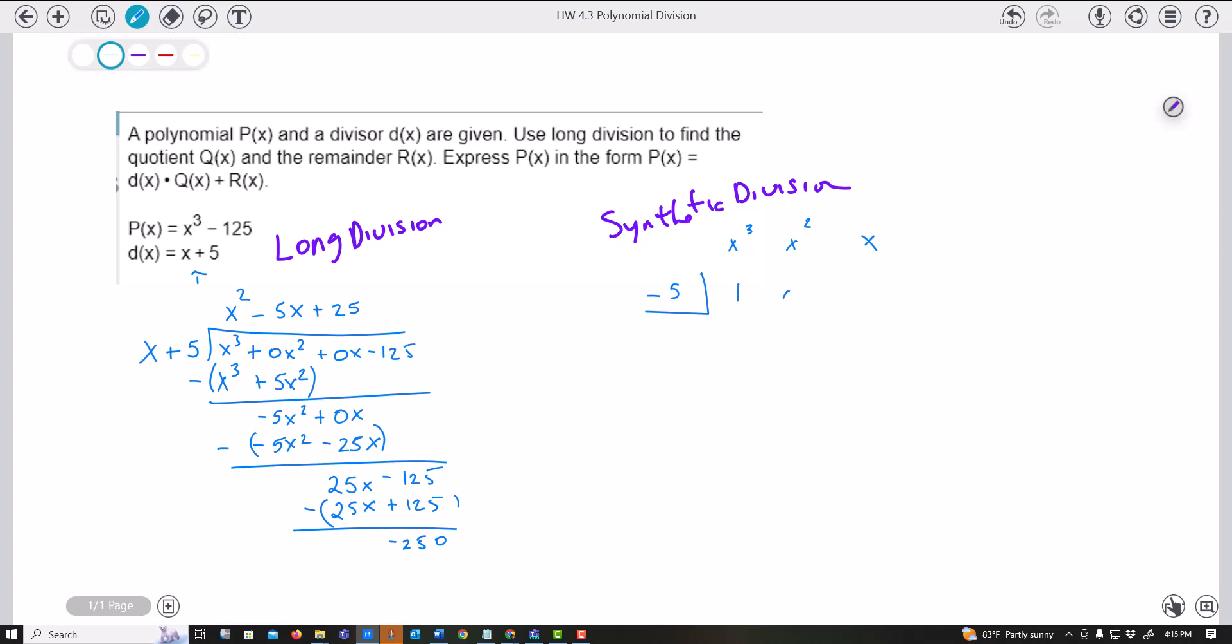And so I can see that the coefficient on my cubed is 1. There is no squared. There is no x. And then my value. And so with synthetic division, we bring down the first value. Multiply negative 5 times 1, negative 5. Bring 0 minus negative 5.